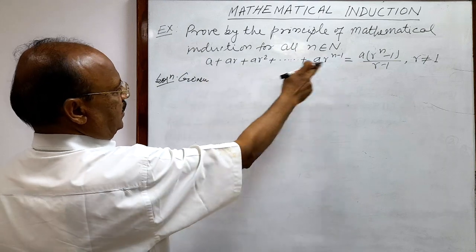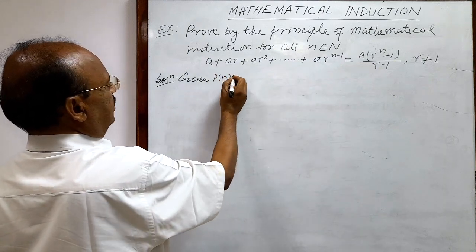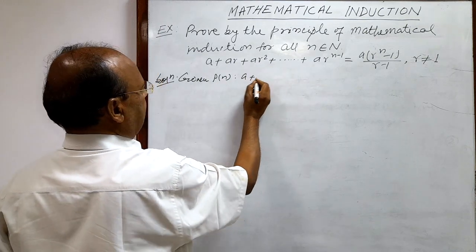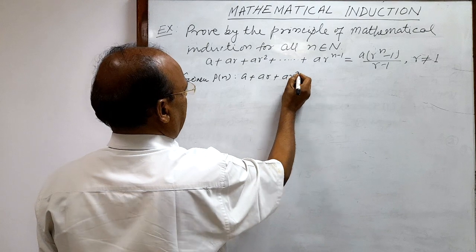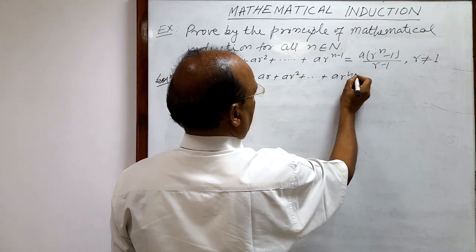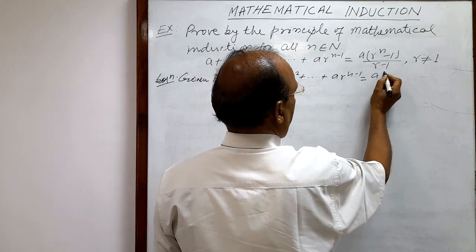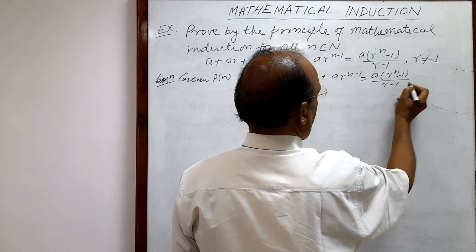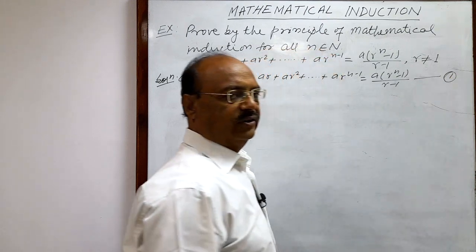The statement, denoted by P(n), is: a + ar + ar² + ... + ar^(n-1) = a(r^n - 1)/(r - 1). Let us call this relation number 1.